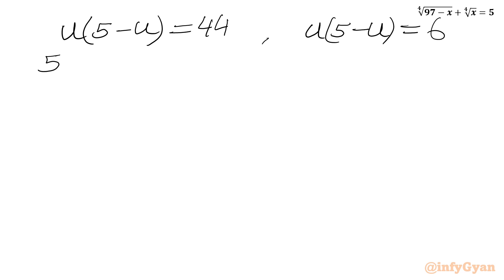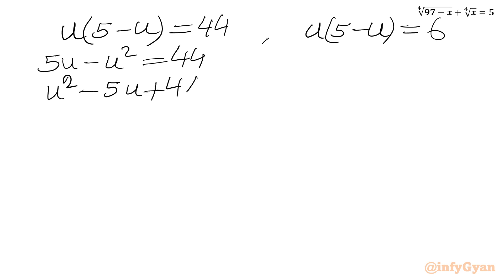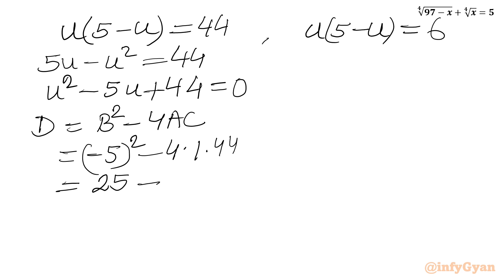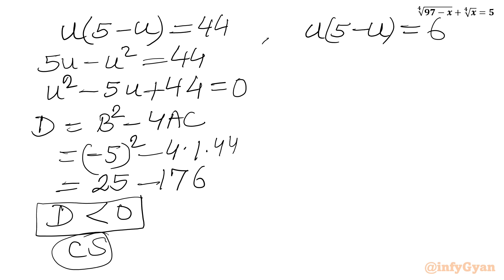For the first case: 5u minus u² equals 44, or u² minus 5u plus 44 equals 0. Checking the discriminant: b² minus 4ac equals 25 minus 176, which is negative. So we get complex solutions and can reject this quadratic for real solutions.